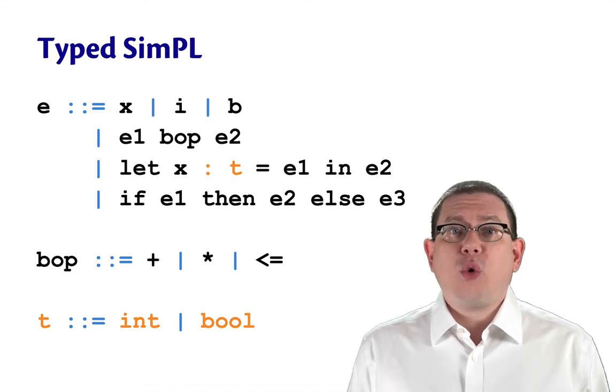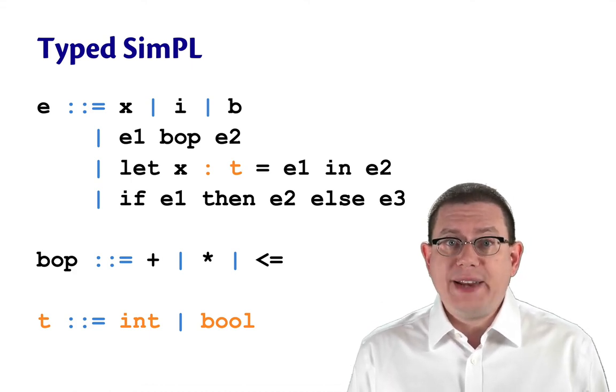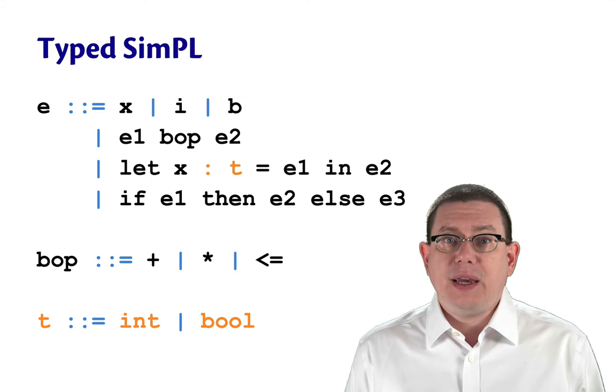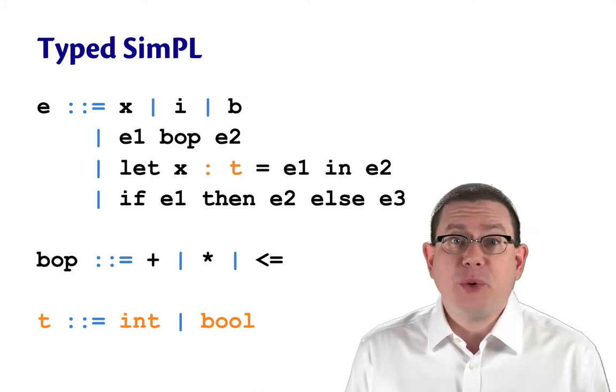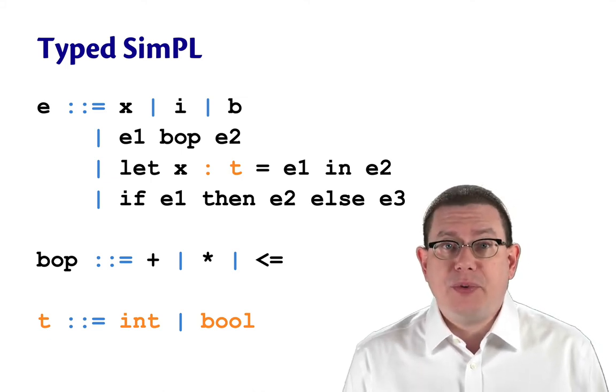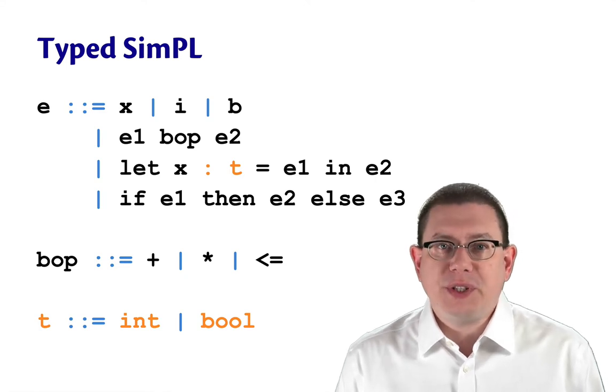Now I'm going to require the programmer to write down colon t in a let binding. So there's no type inference here. You must write down the type. We'll return to type inference later.